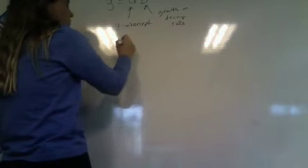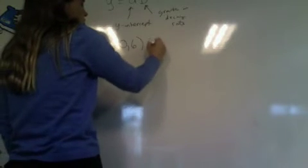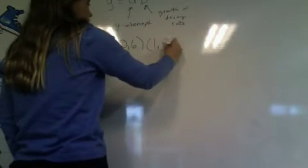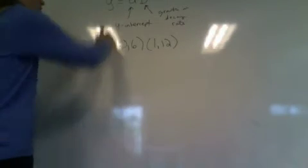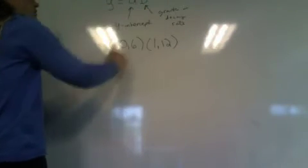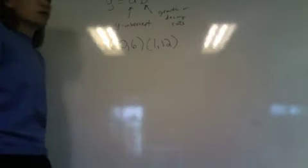All right. So if I give you the ordered pairs (0, 6) and (1, 12), and say find an exponential function, can you look at this and tell me what your y-intercept is without doing any work?